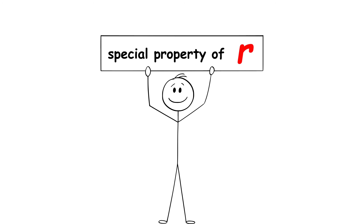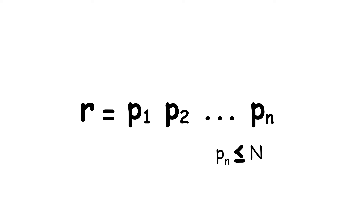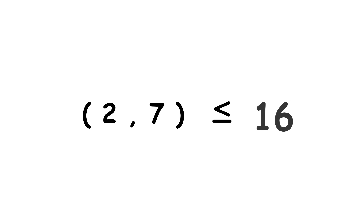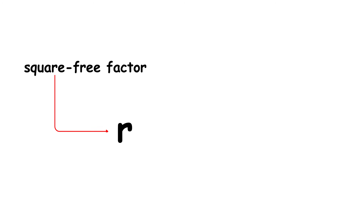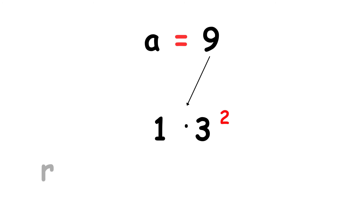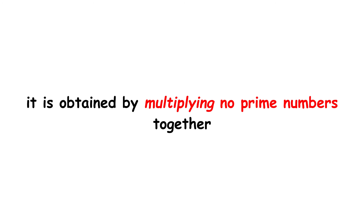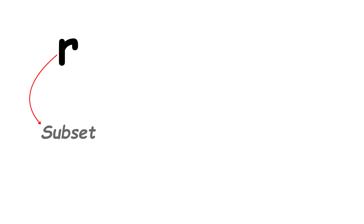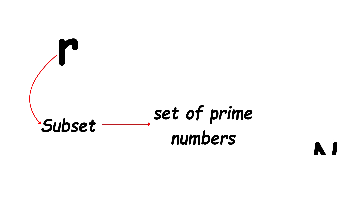Notice a special property of the number R. Whatever value of A we choose, R will always be a product of prime numbers which are less than or equal to N, and each prime number will appear at most once. In this case, the prime numbers are 2 and 7, and each of them is less than or equal to 16. In some cases, the square-free factor R will actually be equal to 1. For example, when A equals 9, we express 9 as 1 times 3 squared, so R equals 1 and S equals 3. In this case, it is obtained by multiplying no prime numbers together. The result of multiplying no numbers is called the empty product, and it is equal to 1.